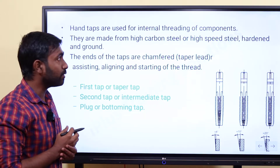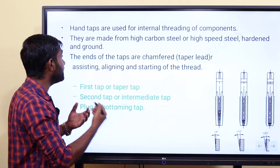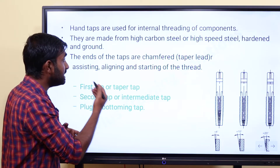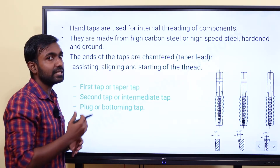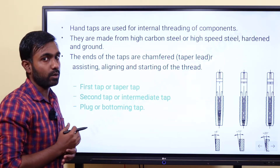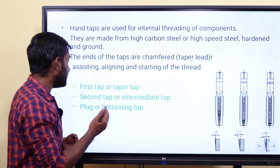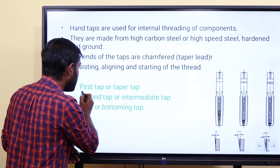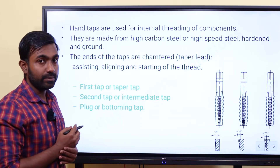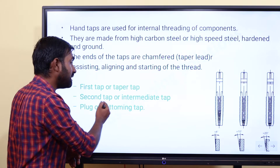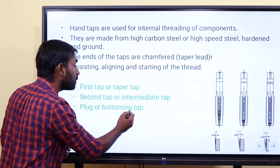High speed HSS is used, and high carbon steel is used. There are three types of taps. The first is Taper tap. The second is Intermediate tap. The third is Plug or Bottom tap.